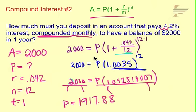So if we need $2,000 in a year and we're hoping to get some money off interest, this is how much we would have to deposit right now, $1,917.88. And all the rest of that, we would end up with $2,000 in one year.